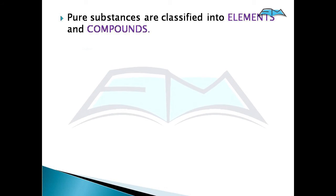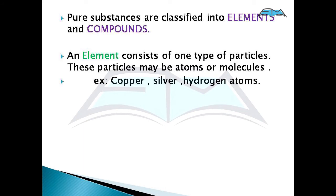Pure substances are classified into elements and compounds. Elements consist of only one type of particle — it may be atoms or molecules. For example, copper, silver, hydrogen atom. When you find copper, you will see it has only copper. So it is an element.